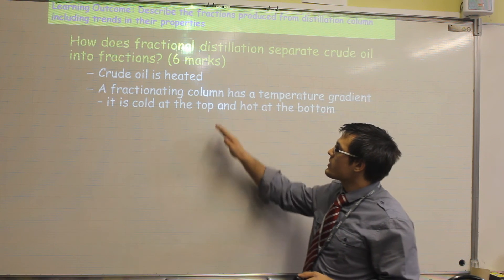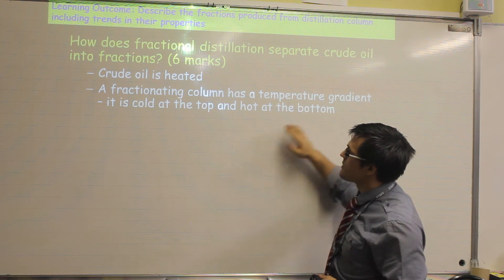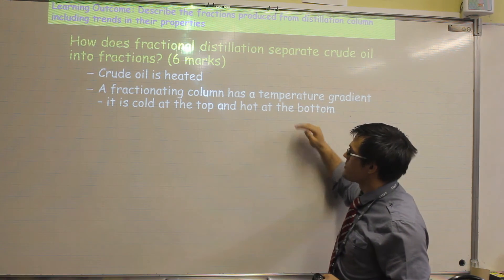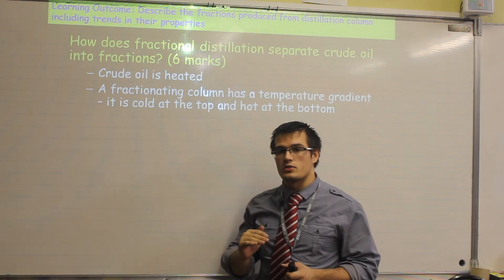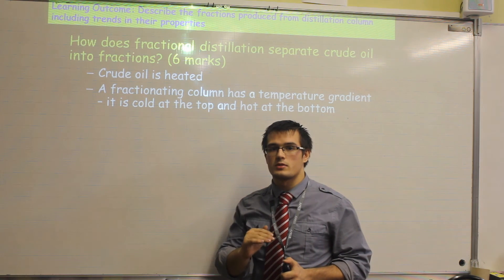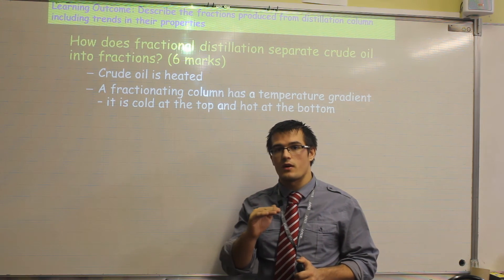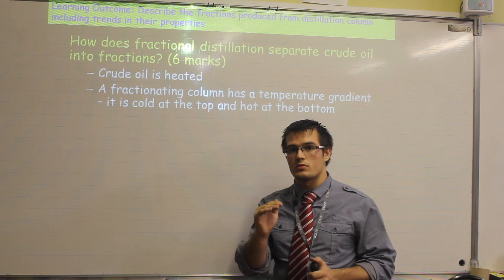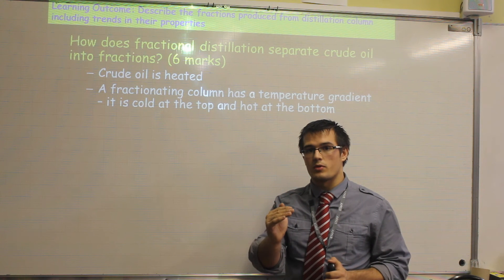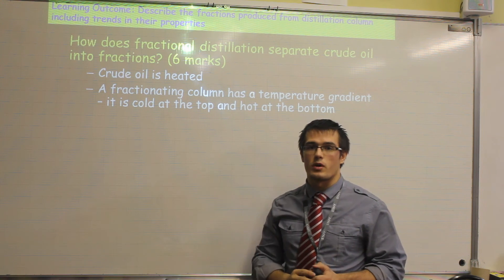Secondly, the fractionating column has a temperature gradient. It is cold at the top and hot at the bottom. This means that the fractions will condense at their boiling points, meaning the fractions with high boiling points will remain at the bottom. The ones with low boiling points will condense as they go up the column.